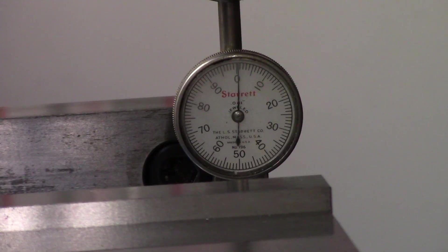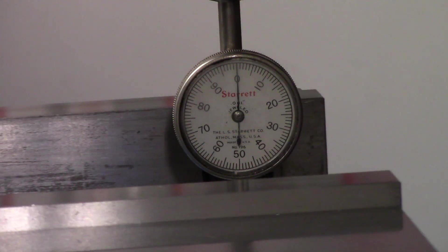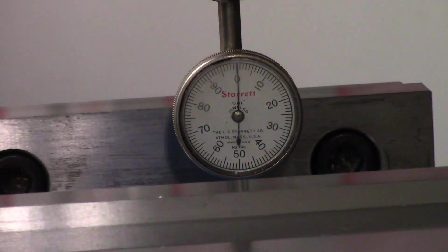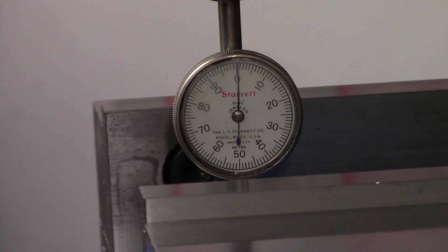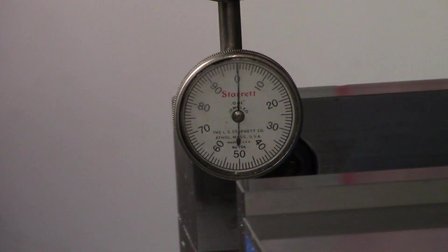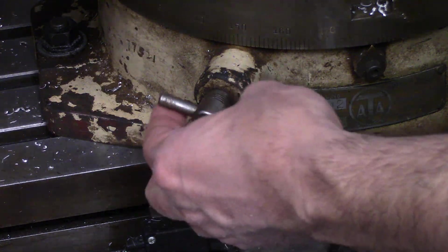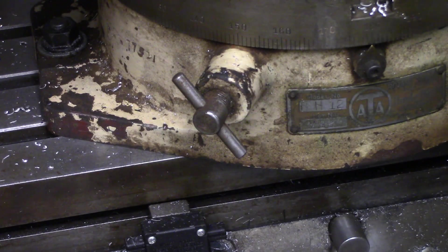I need to sweep the vise in to be aligned with the table travel with the rotary table at the zero degree mark. This is partially why the center of rotation is irrelevant. As long as the vise jaw is dialed in at zero, it will be dialed in at 180 as well. Just be sure to lock the rotary table down before tapping the vise around.